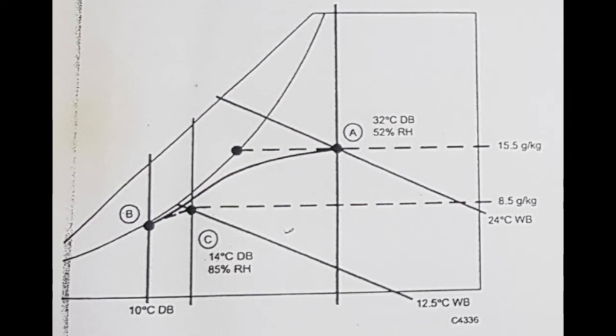Point number three: The leaving air is at 14 degrees centigrade dry bulb and 85 percent RH, that is point C. The moisture content is 8.5 grams of moisture per kilogram of dry air. The moisture removed is 15.5 grams per kilogram minus 8.5 grams per kilogram, which equals 7 grams of moisture per kilogram of dry air.